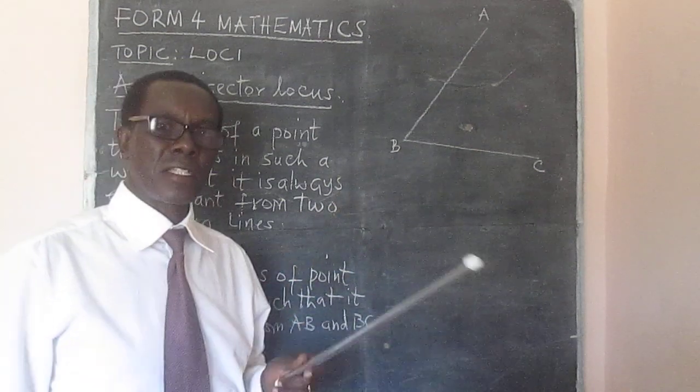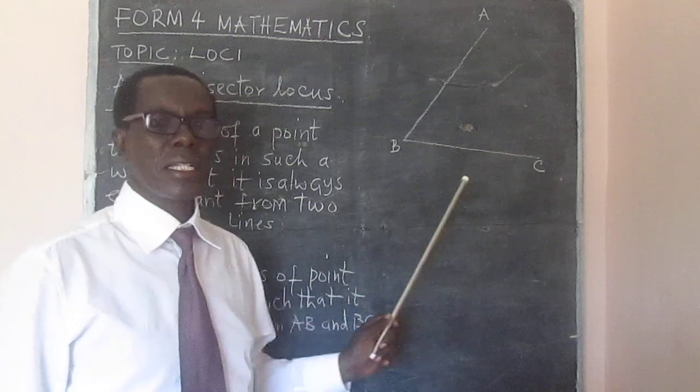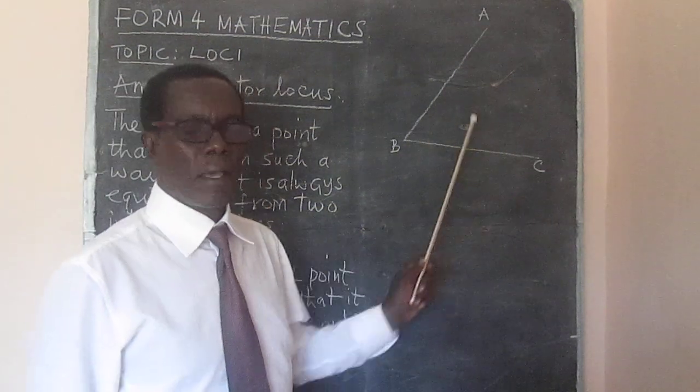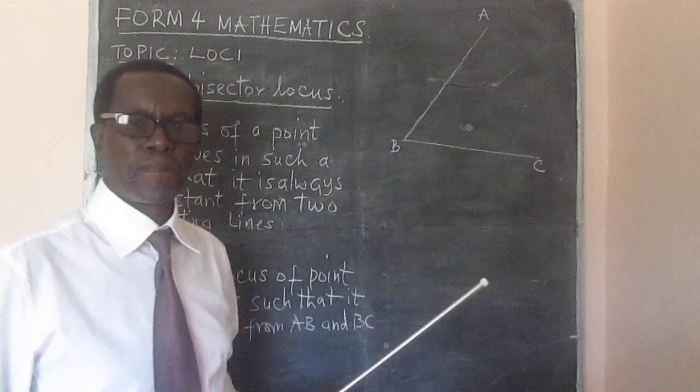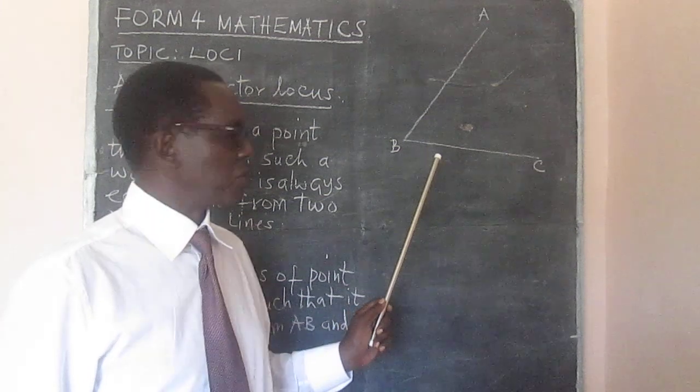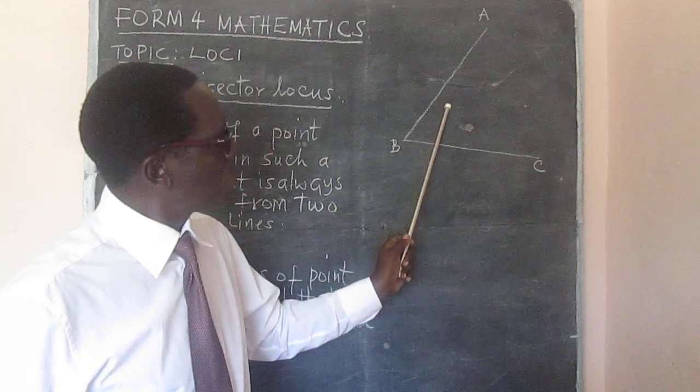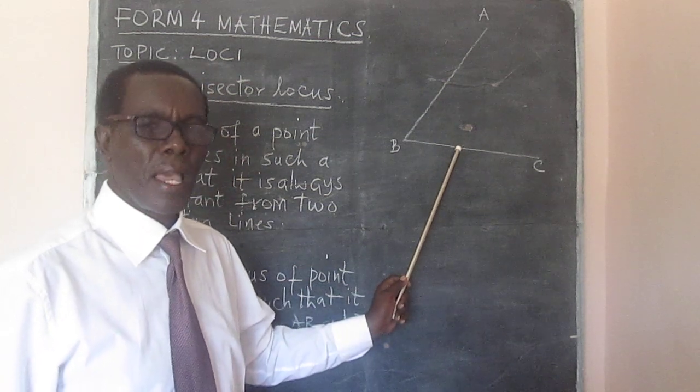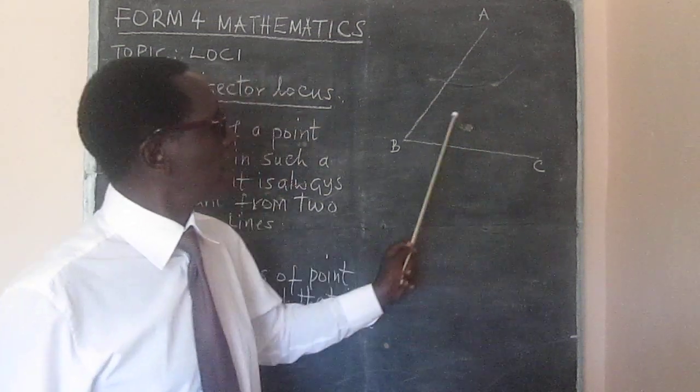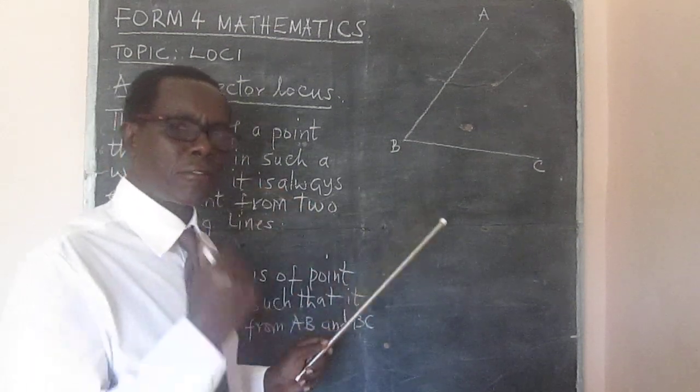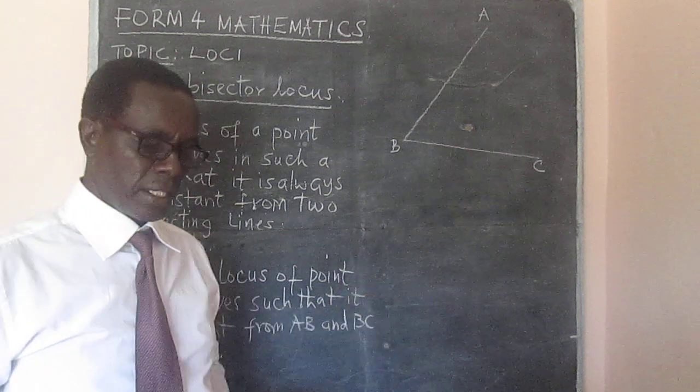We would like to establish the path followed by a point that moves between AB and BC such that it is always equidistant or equal distance from BC and from AB. If there will be a point that moves here so that it is a given distance from line AB and also the same distance from line BC, then this must be the point that moves in between here. In other words, it is that point that will trace a line which bisects the angle ABC.